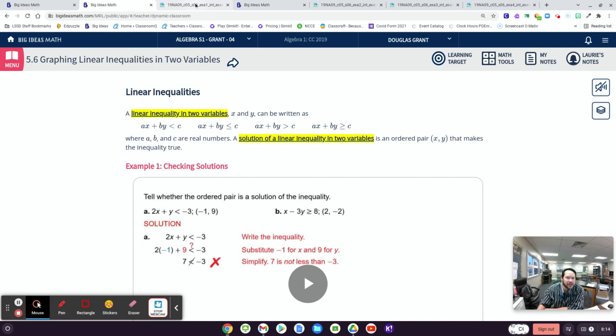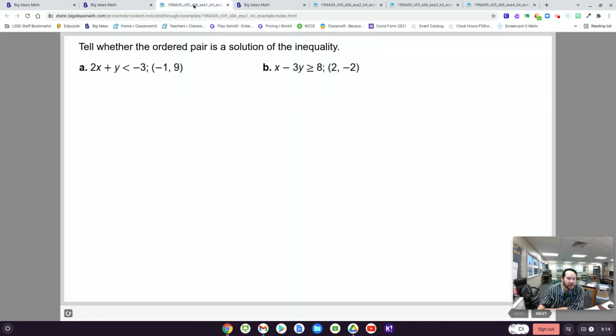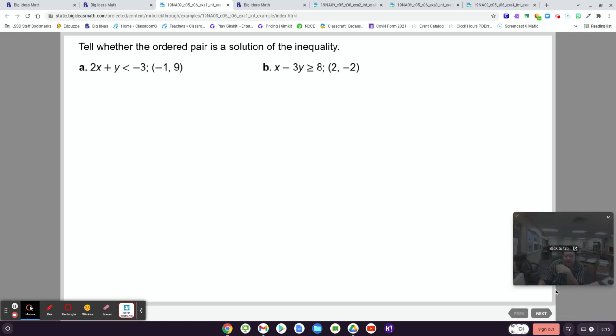So jot that down just so you have a good definition for linear inequalities. And then we're going to jump into some examples. Here we go. So let's say you have the linear inequality 2x plus y is less than negative 3. And the question is, is point negative 1, 9 a solution to this linear inequality? So if you plug negative 1 in for x and 9 for y, is this true or is it false? Let's go through that one.